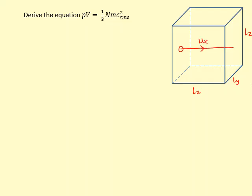The particle has a momentum of mux and it bounces off the wall elastically, coming back with a speed of minus ux and momentum of minus mux. So the force on the wall during this collision is the rate of change of momentum. In an elastic collision like this, the change in momentum is 2mux — it should be minus 2mux but we'll ignore the negative signs for now.